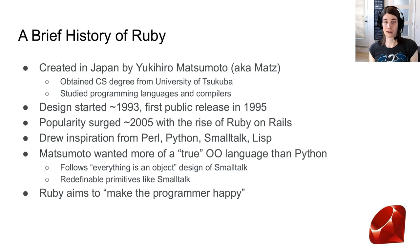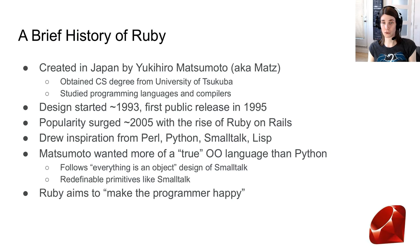Let's talk about Ruby. The language was created in Japan by Yukihiro Matsumoto, who likes to be called Matz. He obtained his CS degree from the University of Tsukuba and studied programming languages and compilers there. Language design started in 1993, the first public release was in 1995, but popularity really surged in 2005 with Ruby on Rails. The language draws from Perl, Python, Smalltalk, and Lisp, and follows Smalltalk's everything-is-an-object philosophy.